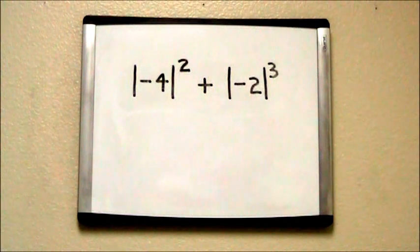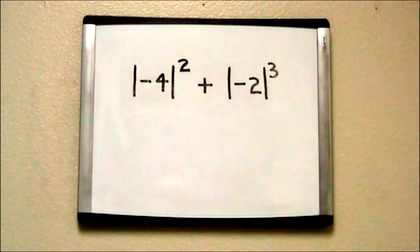When we're adding absolute values with exponents, we have to write the correct value of the number first and then work on the exponents.